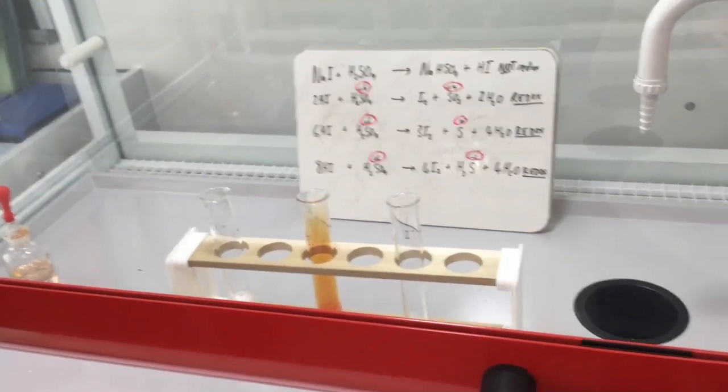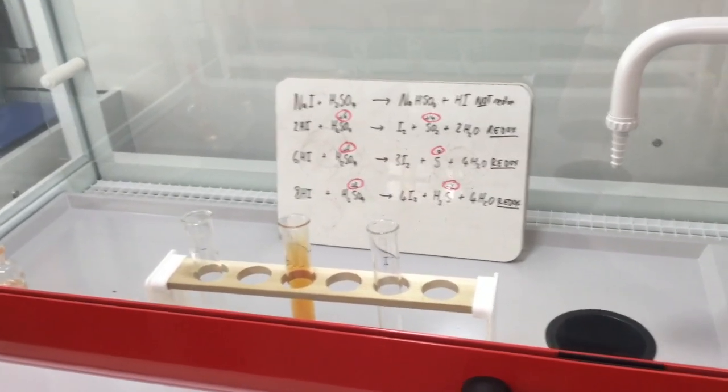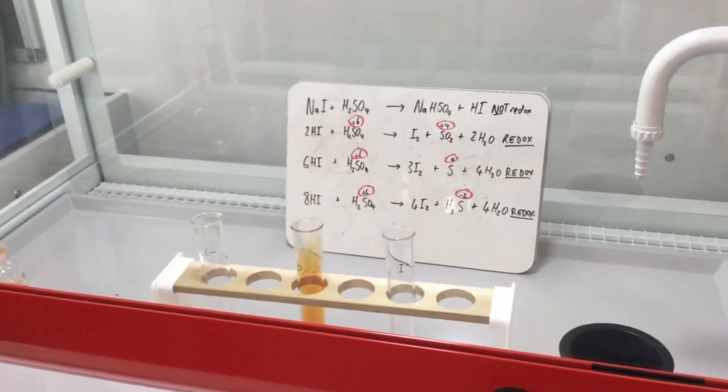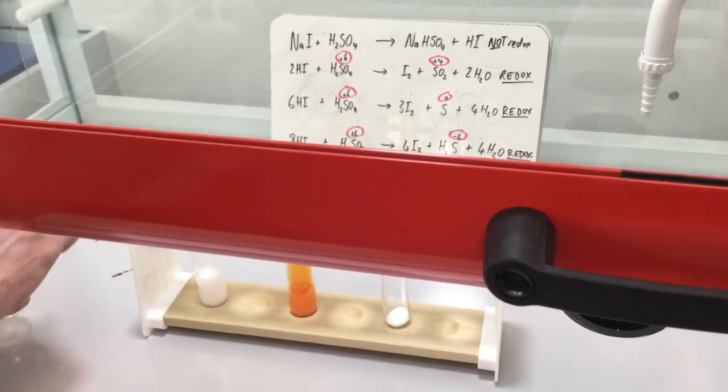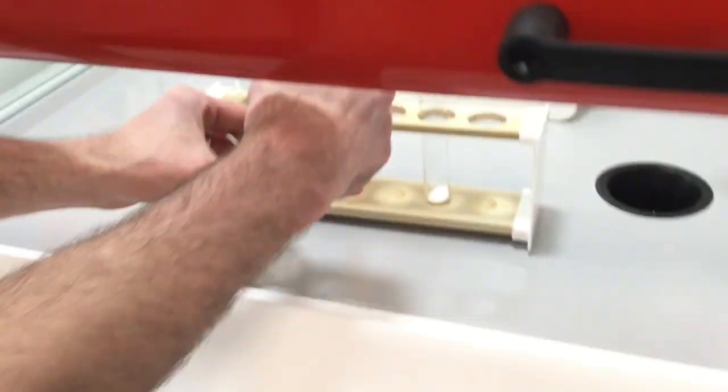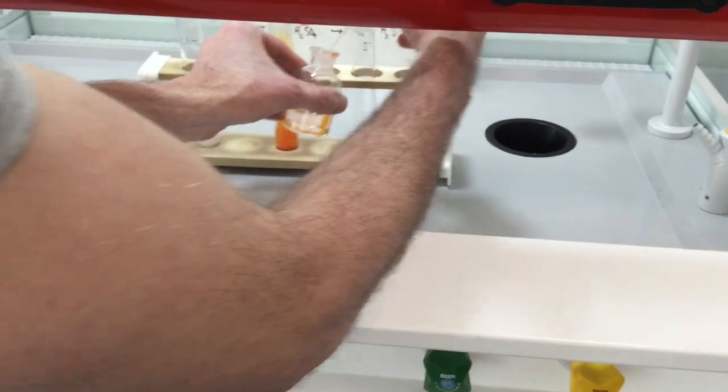We also form elemental iodine which is a black solid, grey black solid. Or if it turns into a gas, it's a purple gas. Hydrogen sulfide is an acidic gas. It smells of rotten eggs. And sulfur dioxide is also an acidic gas.